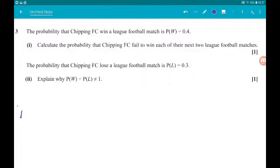So, the probability that Chipping FC win a league football match is P(W) = 0.4. Part 1 says to calculate the probability that Chipping FC will fail to win each of their next two matches.